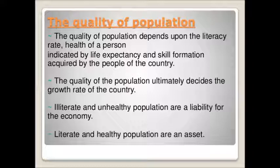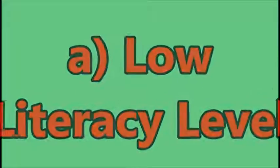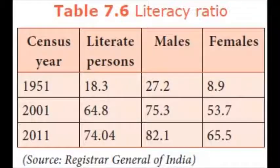Quality is measured through literacy, skill attainments and life expectancy. The literacy rate in India is low. In 2011, 74% of people were literate, indicating that more than 31 crore people were not able to read and write. In India, the female literacy rate was still lower at just 64%.